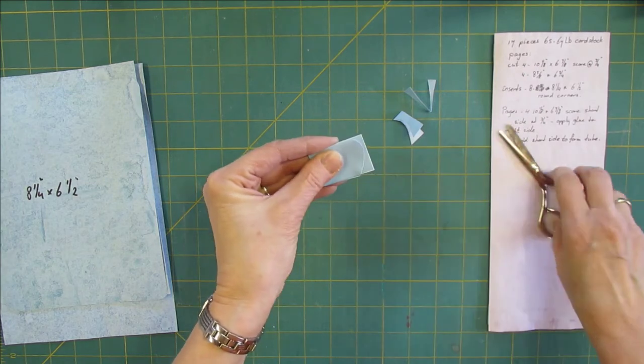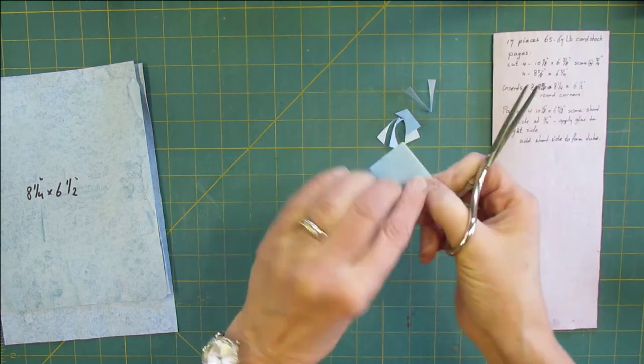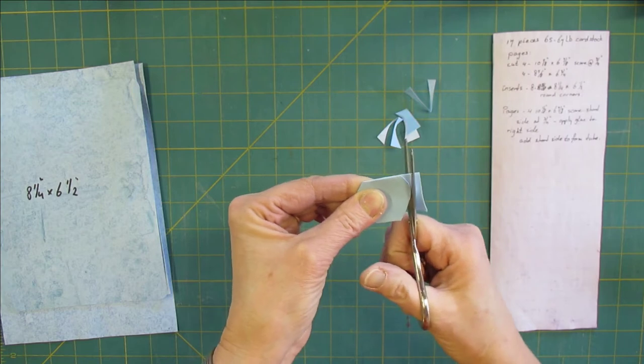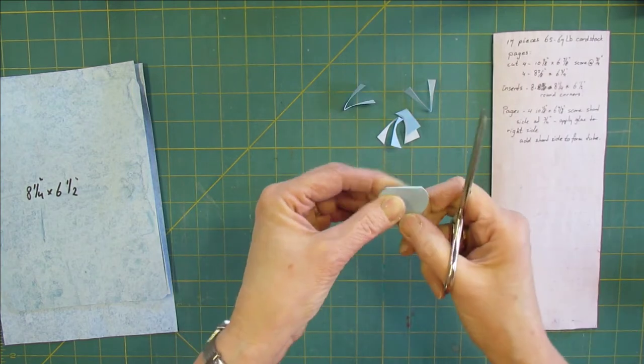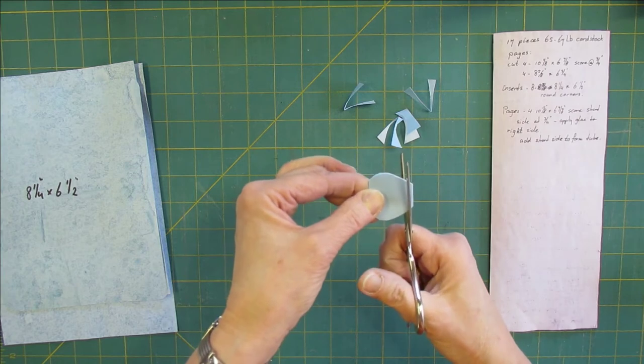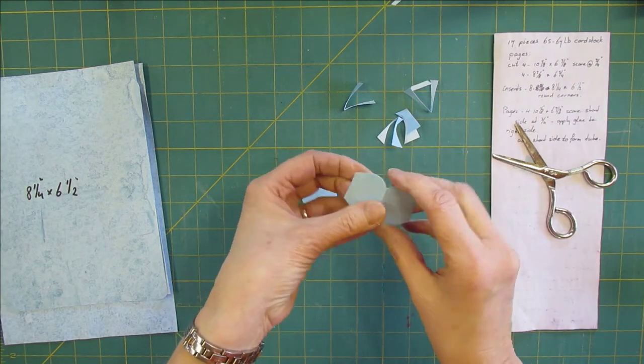Let's make it this wide. Cut around here, turn it over and cut around here. This might be a little bit long for a tab so let's cut off a little bit.